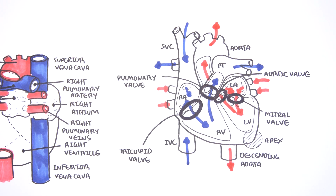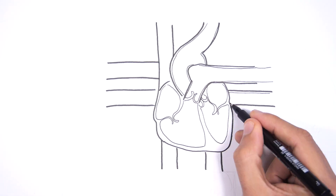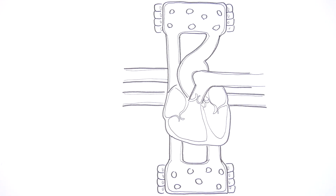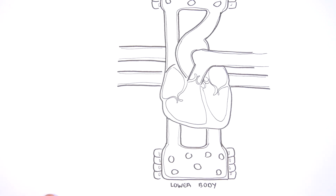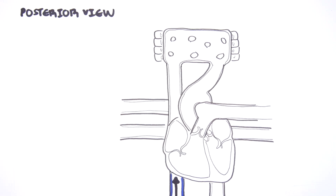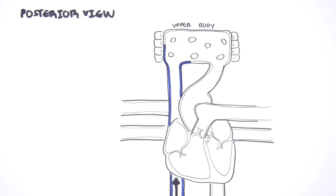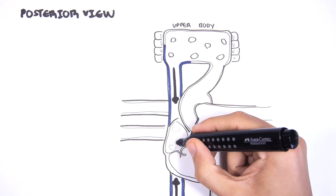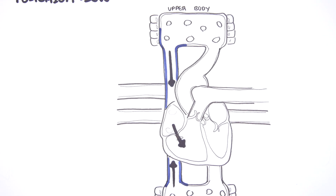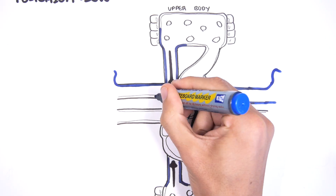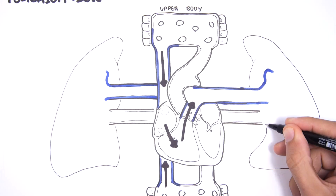Now that we know the flow of blood through the heart, let's look at the flow from the heart to the body tissues and to the lungs in more detail — this is your systemic and pulmonary circulation. Once your tissues around the body use oxygen, deoxygenated blood returns to the right side of the heart from the upper and lower body, to the right atrium and then the right ventricle. The deoxygenated blood is pumped through the pulmonary trunk towards the lungs via the right and left pulmonary arteries.